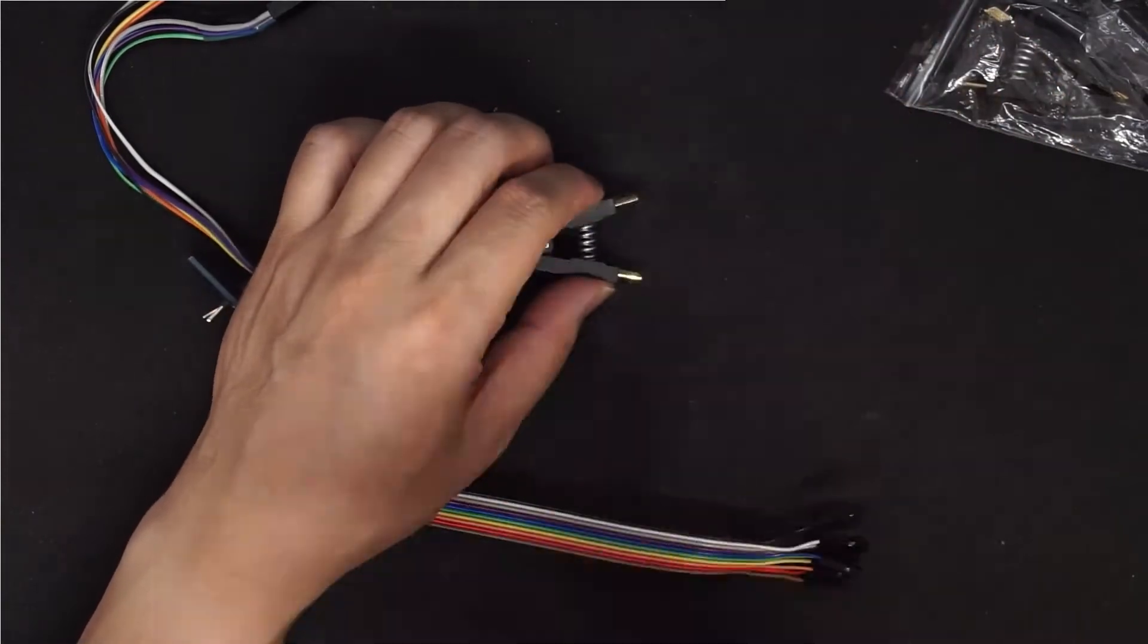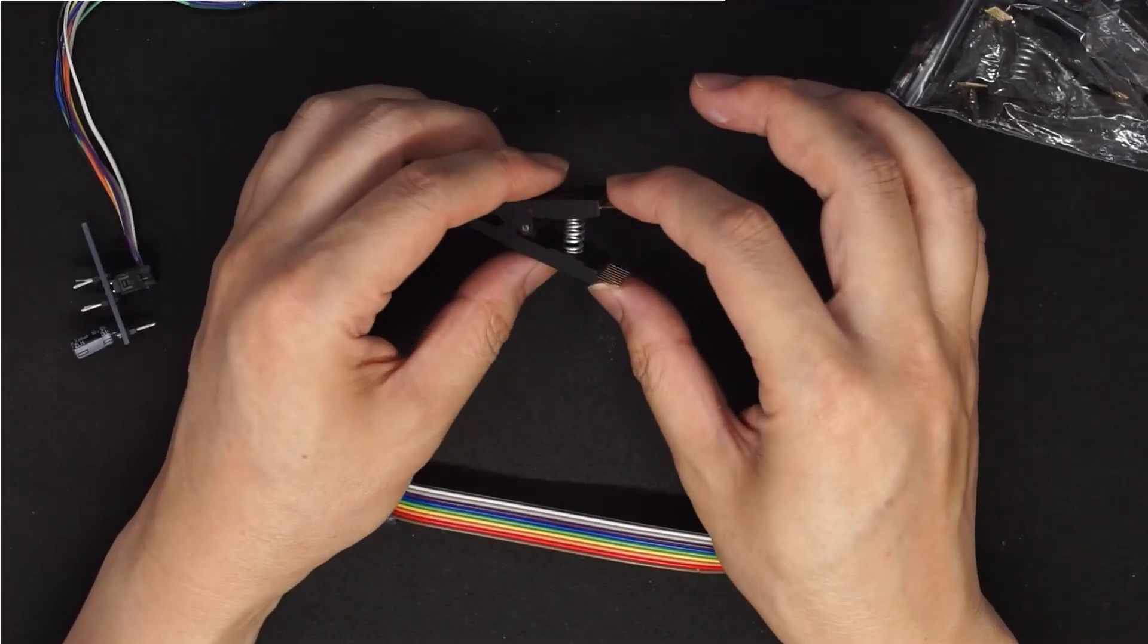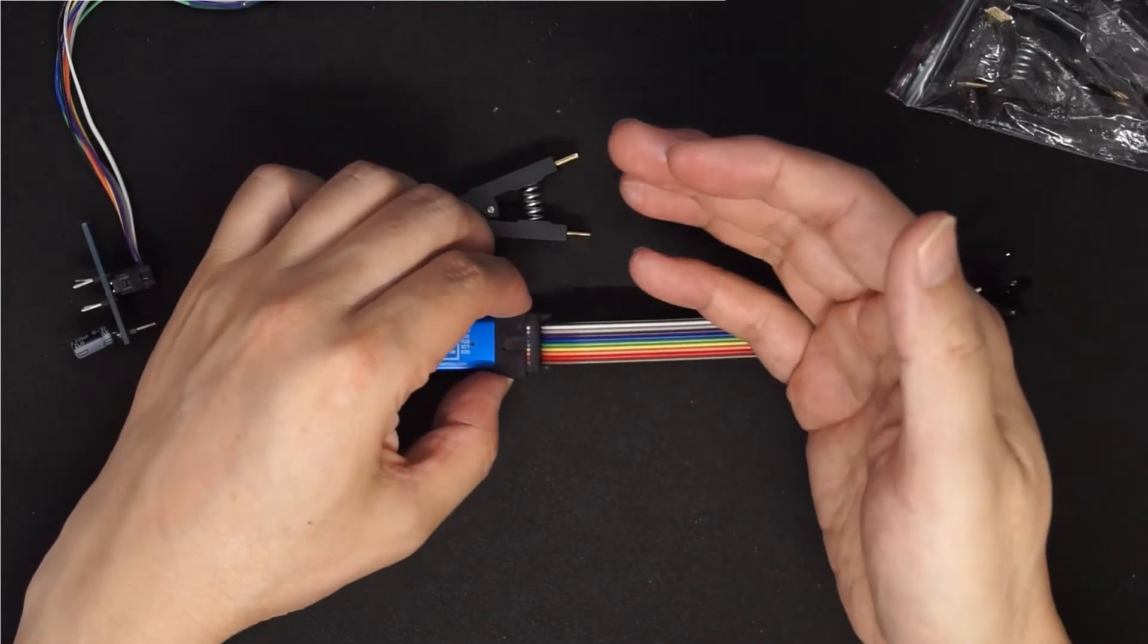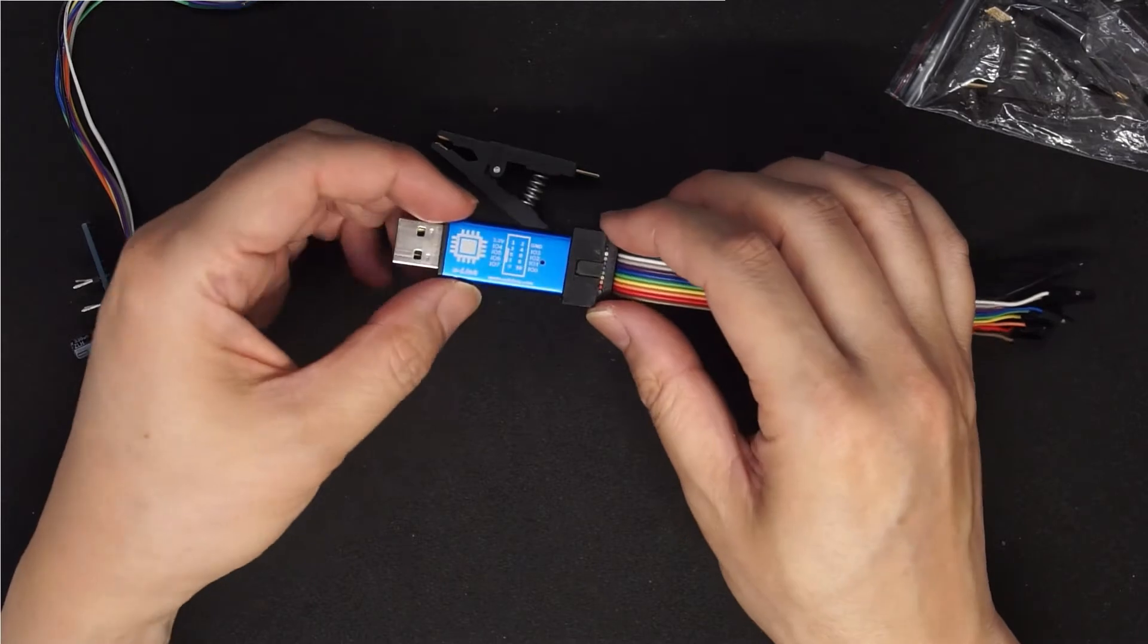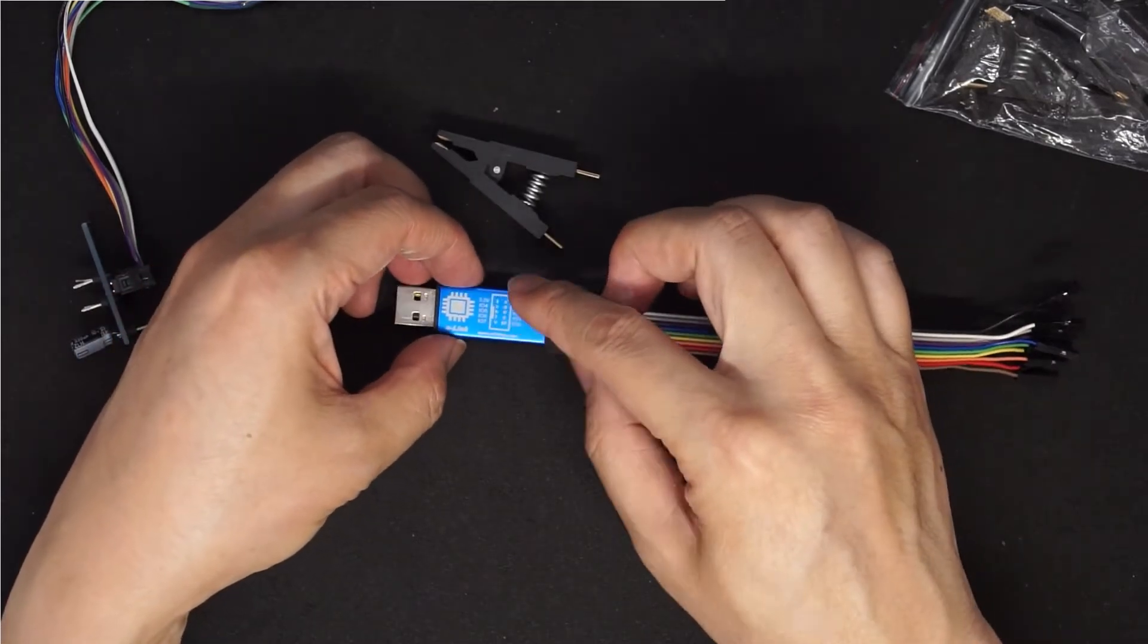On AliExpress it only costs about $1.50, and if you program the flash that only draws less than 400mA or 500mA from 3.3V, then you can make a very simple connection using 3.3V from the U-Link NT.